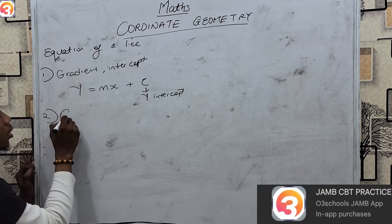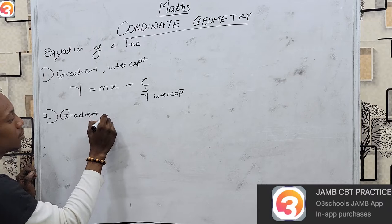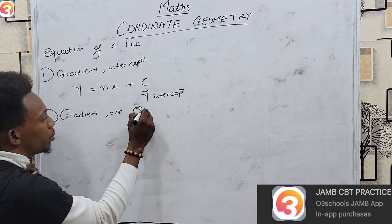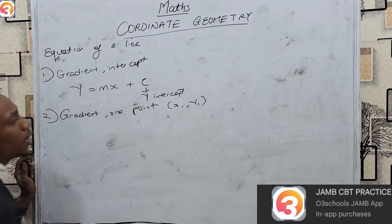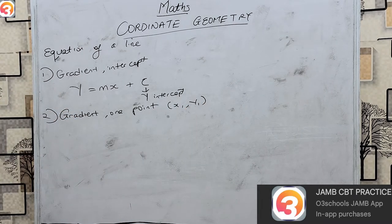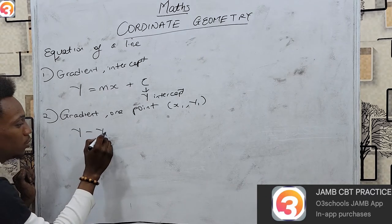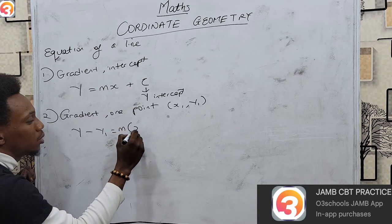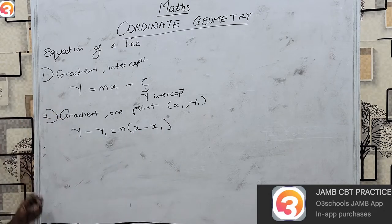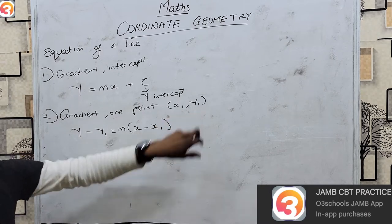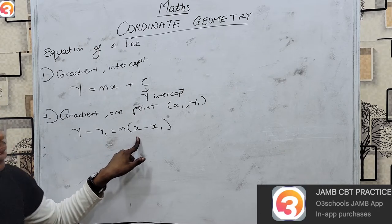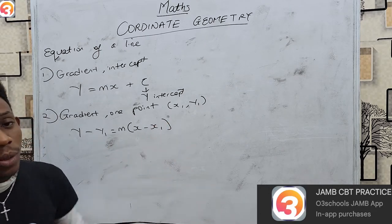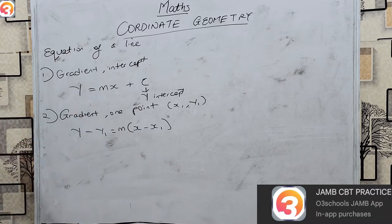The second form is gradient and one point. If you are given a gradient and one point (x1, y1), the formula becomes: y minus y1 equals m times (x minus x1). Y minus the given y-coordinate equals your gradient times the bracket of x — your variable — minus x1, the given value. That is the gradient-one-point form.